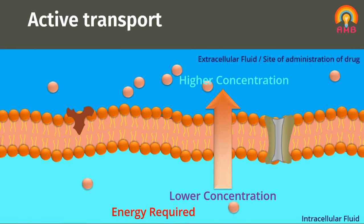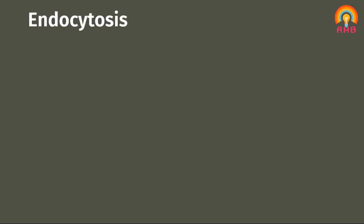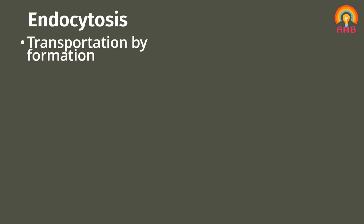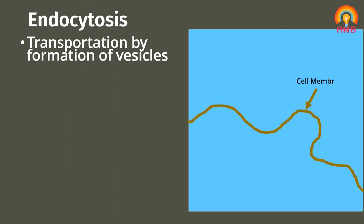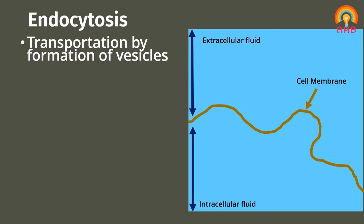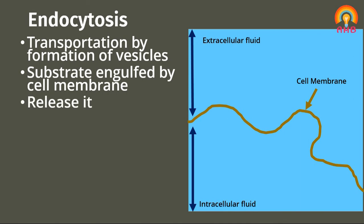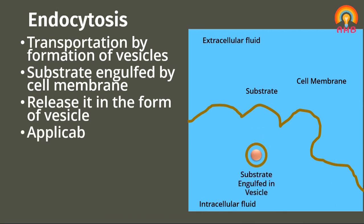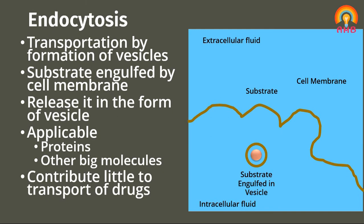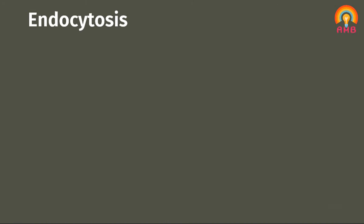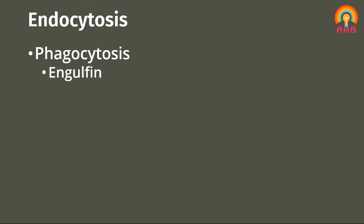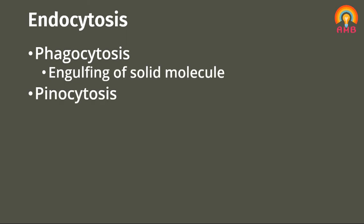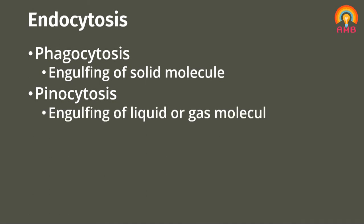Now we have to discuss the last process of transportation, that is endocytosis. It is the process of transport across the cell in particulate form by formation of vesicles. Large molecules are engulfed by the cell membrane and released inside the cell in the form of vesicles. It needs energy because it requires a lot of movement in the cell wall. This process is applicable to proteins and other big molecules and contributes little to transport of most drugs. Transport of solid molecules is called phagocytosis, while transport of liquid or gas molecules is called pinocytosis.